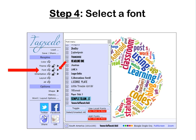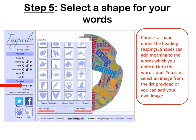Next you'll select Fonts and there's quite a nice selection of fonts to choose from. Then you'll go for the shapes. You can even add your own shape, your own image. But if you want to use one of their shapes, it's very easy to do that.